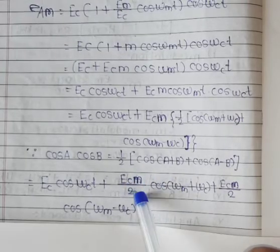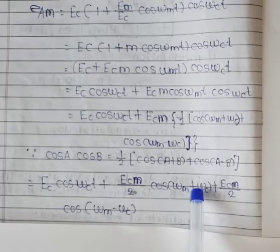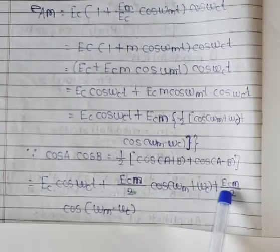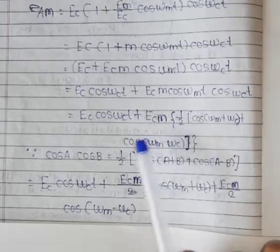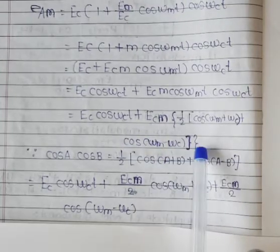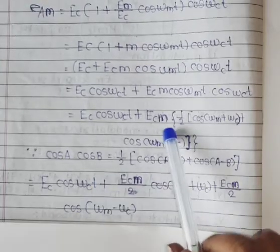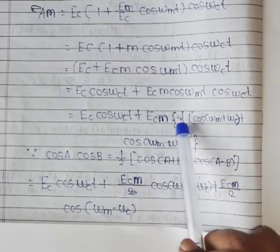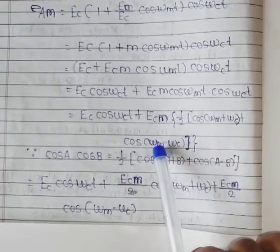And cos(ω_m + ω_c)t. Second term will be: E_c*m/2*cos(ω_m - ω_c)t. So what have I done? The term is E_c*m divided by 2. This is the term, this is the term, and this is the term.